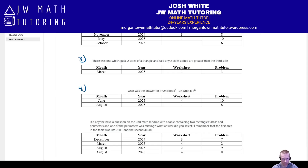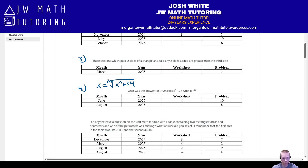Fourth problem: this is difficult to type out, but it looks something like X equals the 2Nth root of something, and then X to the N plus some number. It asks for the value of X to the N. You raise both sides to the 2N power and it turns into a quadratic-form equation, which you factor like a quadratic. Check out the two examples I've previously done in June 2025 and August 2025.